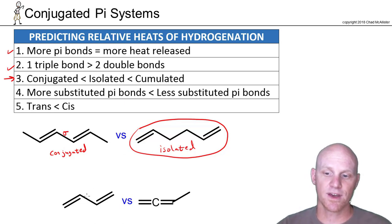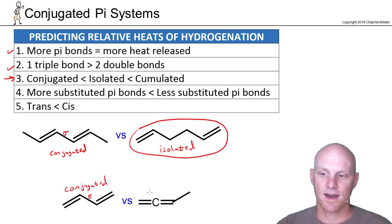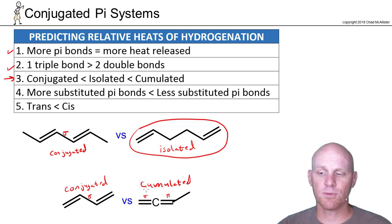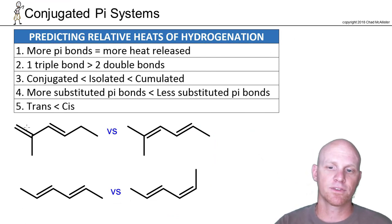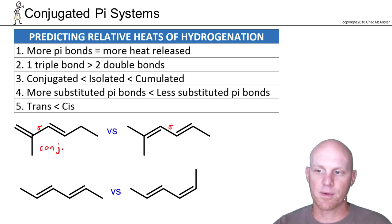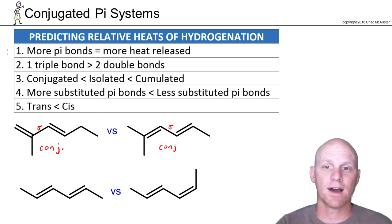In the next pair, we've got a single sigma bond between the pi bonds in both cases, so both are conjugated — that doesn't help us distinguish them. They both have two pi electrons and no triple bonds. So they're equal on those criteria. When both systems are conjugated, we fall back on what we learned when studying alkenes.